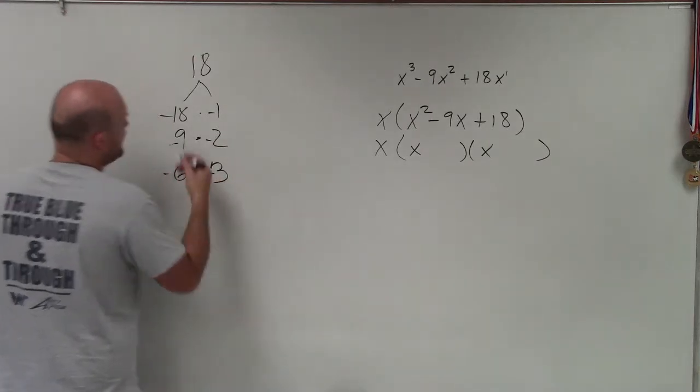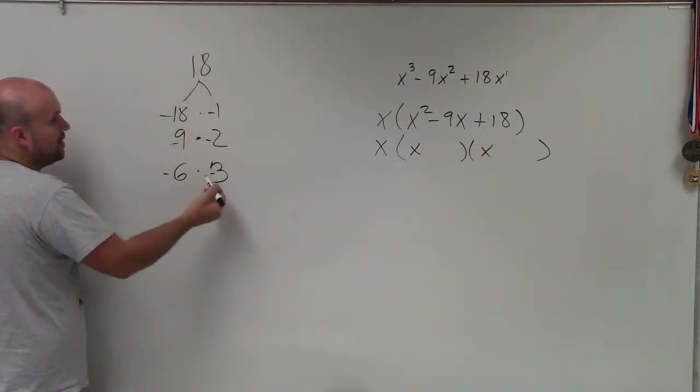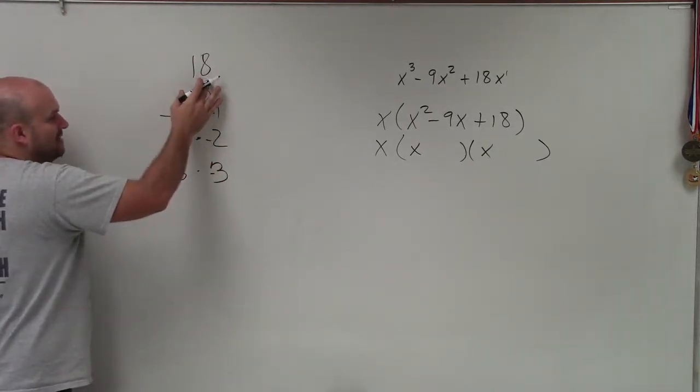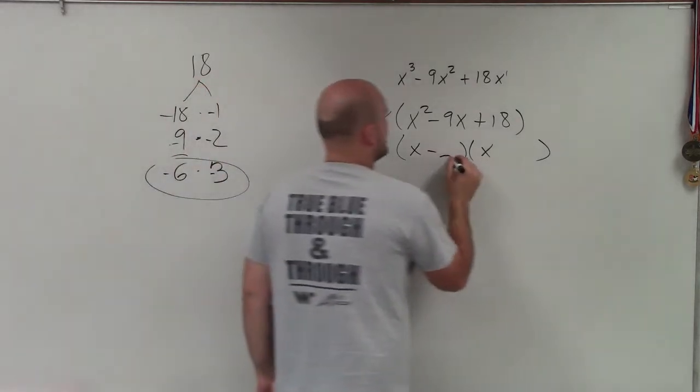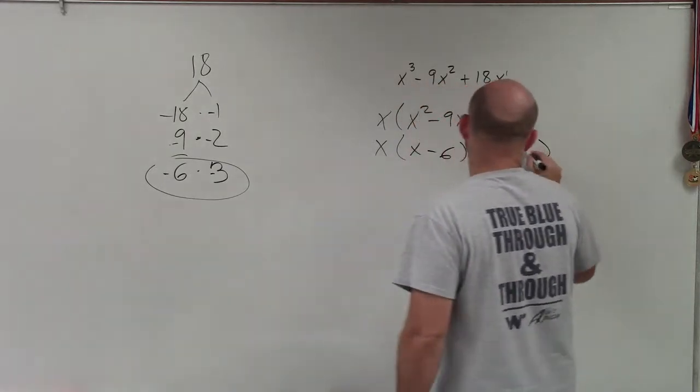So I look, when adding these factors, we know they multiply to give us 18. But when adding them, which one gives us 9? That's these two. So therefore, I have x minus 6 and x minus 3.